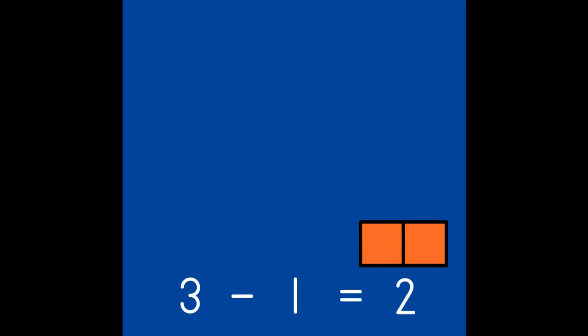When we separate numbers, we write a number sentence that looks like this: 3 take away 1 is the same as 2. To help us remember the take away sign, we take one of the sticks away. When we take one of our partners away, the other partner is left.